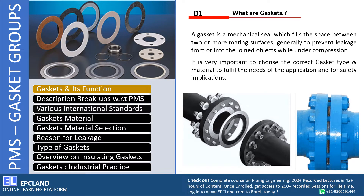In process industry, flange joints are very common, and wherever there are flange joints there is a chance of leakage. A gasket is something which helps us to seal those opening points. A gasket is nothing but a mechanical seal which fills the space between two or more mating surfaces. These mechanical seals prevent leakage from or into the joints — we don't want any internal or external entry into the piping system.